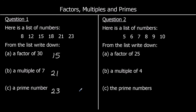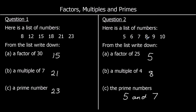Question 2: from the list 5, 6, 7, 8, 9, and 10 — write down a factor of 25: that's 5, since 5 times 5 makes 25. Write down a multiple of 4: that's 8. And write down the prime numbers: 5 is a prime number, and 7 is also a prime number. 6, 8, and 10 are all in the 2 times table, and 9 is in the 3 times table, so 5 and 7 are the primes.